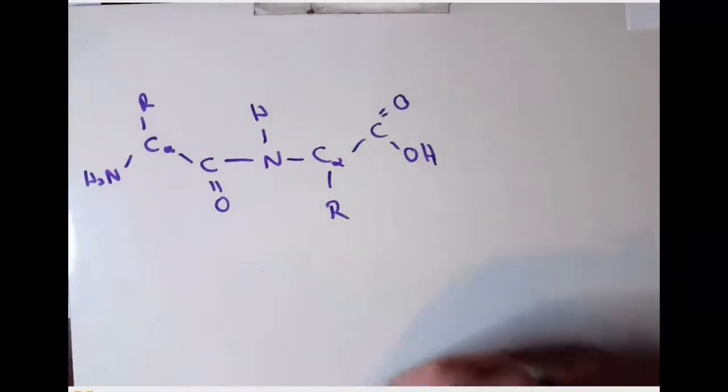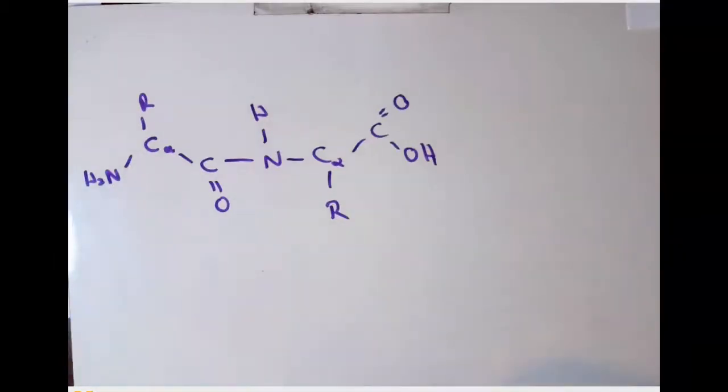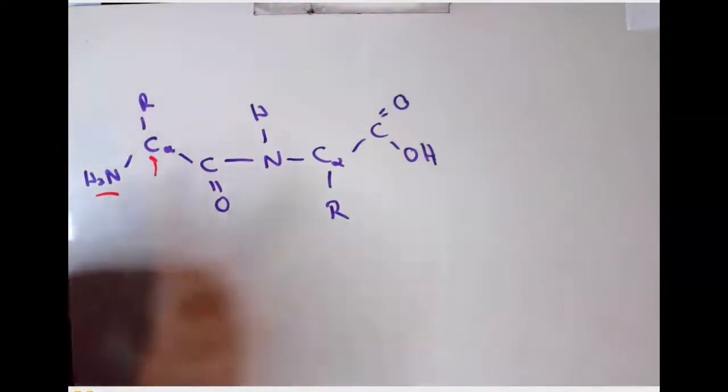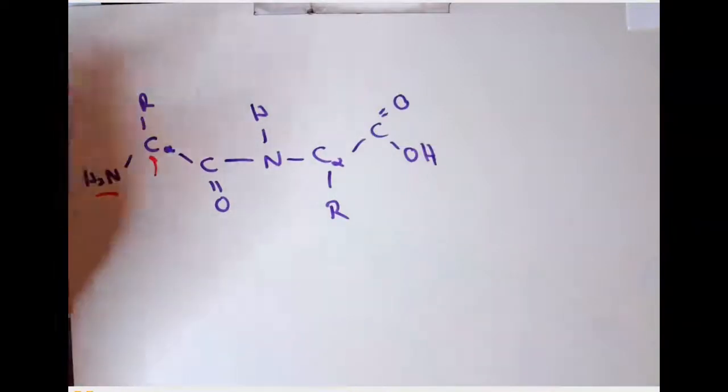Now let's move on to resonance from lecture two. What do we mean by resonance — chemically and conceptually? I have a dipeptide drawn: two amino acids linked by a single peptide bond. We have the amino group of the first amino acid linked to the alpha carbon — the chiral carbon of each amino acid. The R group represents the side chain, which would differ between amino acids. That alpha carbon is linked to a carboxyl group represented by the double-bonded oxygen.